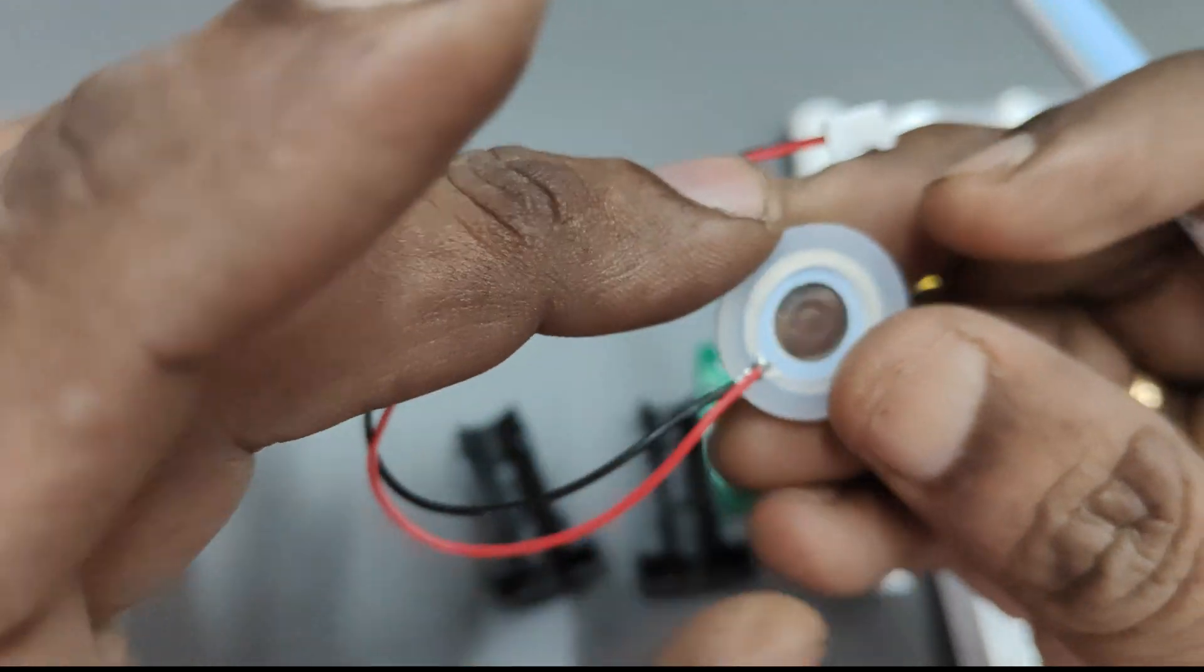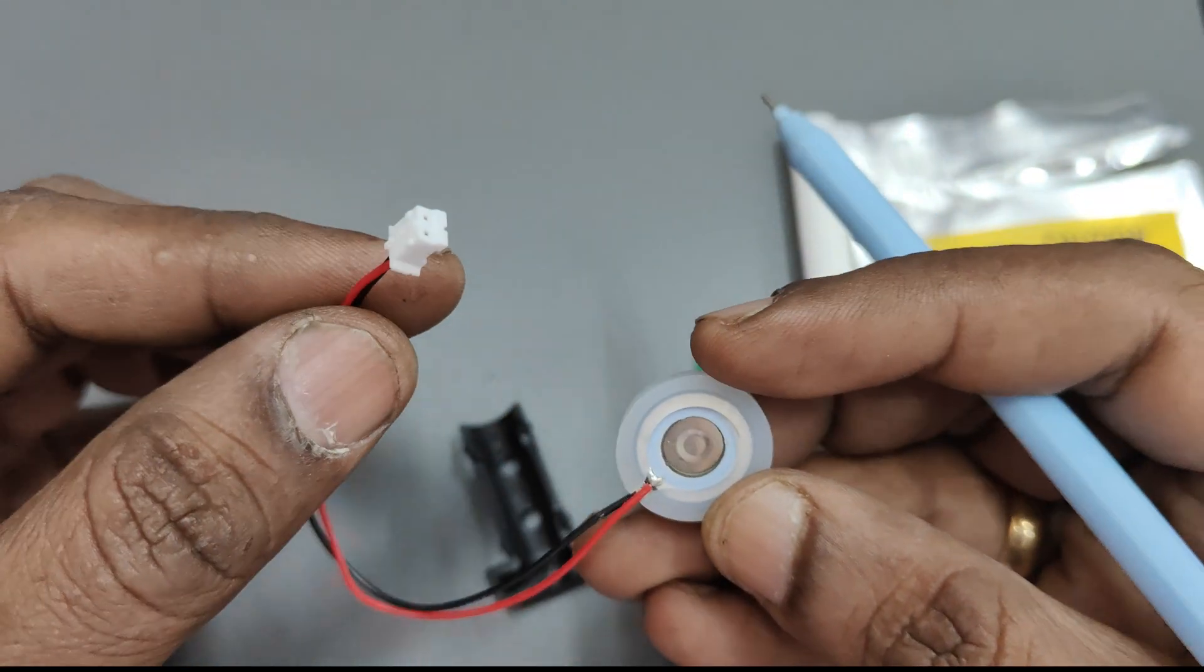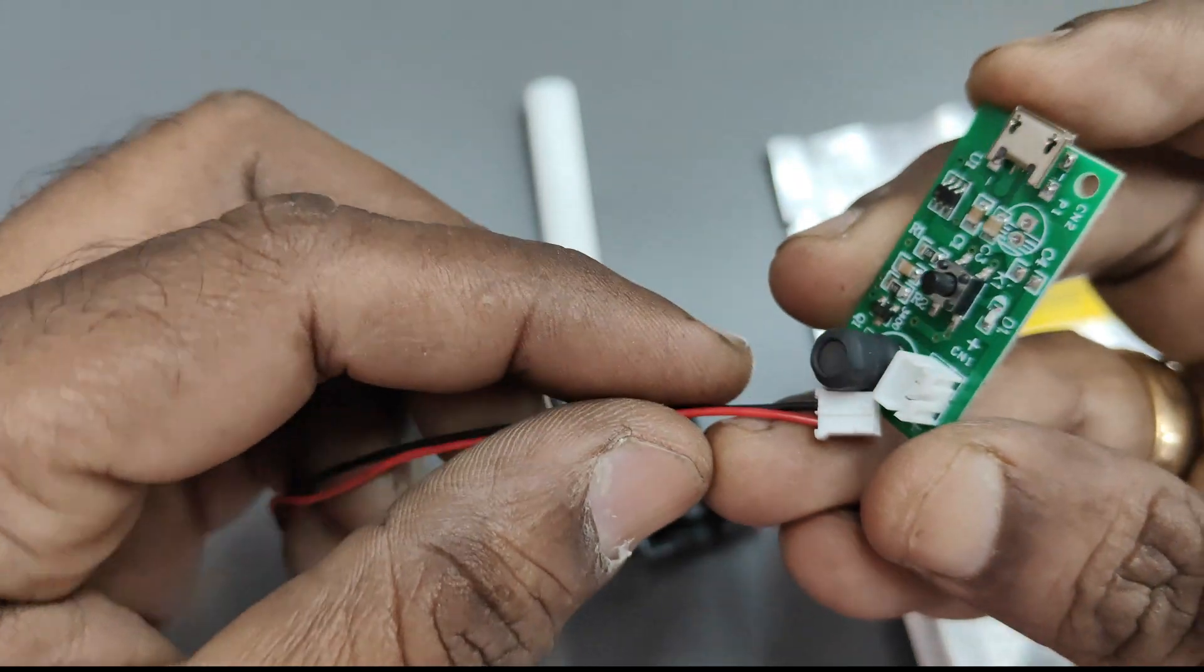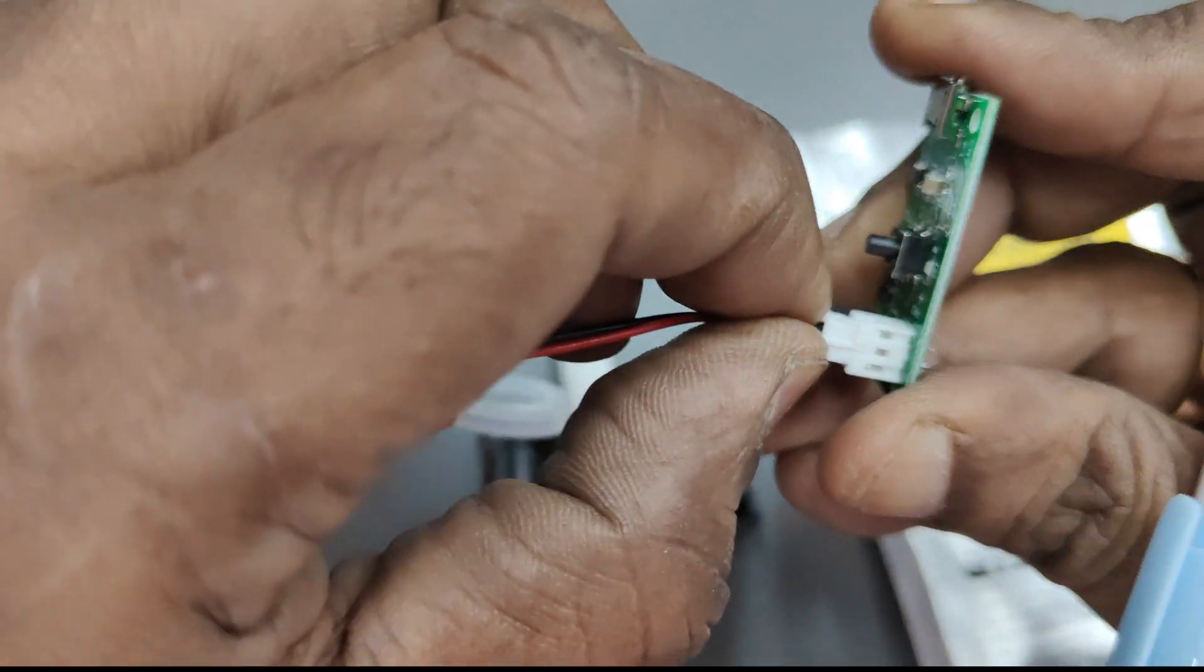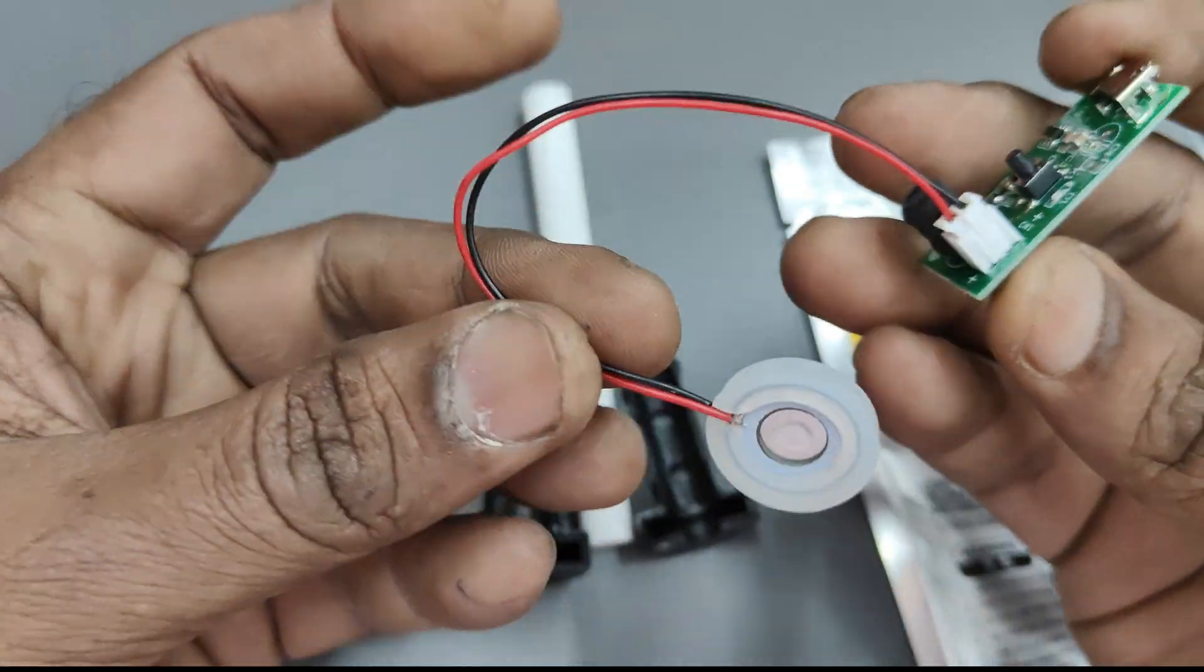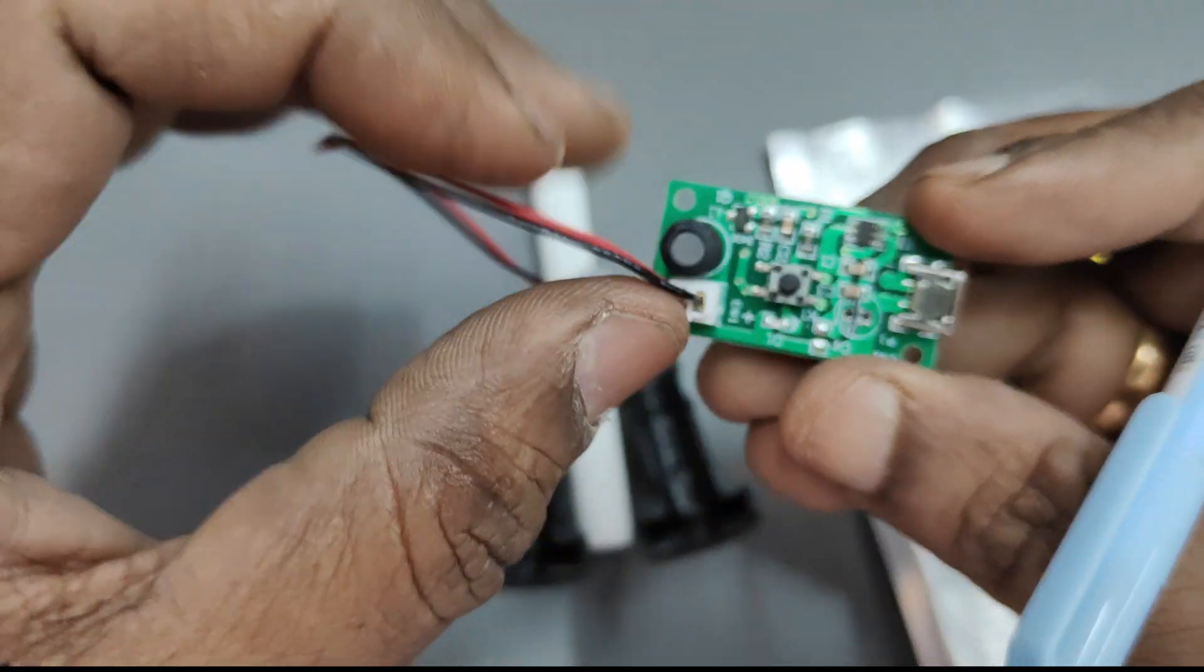It has got two plates, the upper plate and the bottom plate, and the wire is connected to it. This piezoelectric plate is connected to the board, this mini board which contains a USB socket so that you can use your mobile charger to power it up.